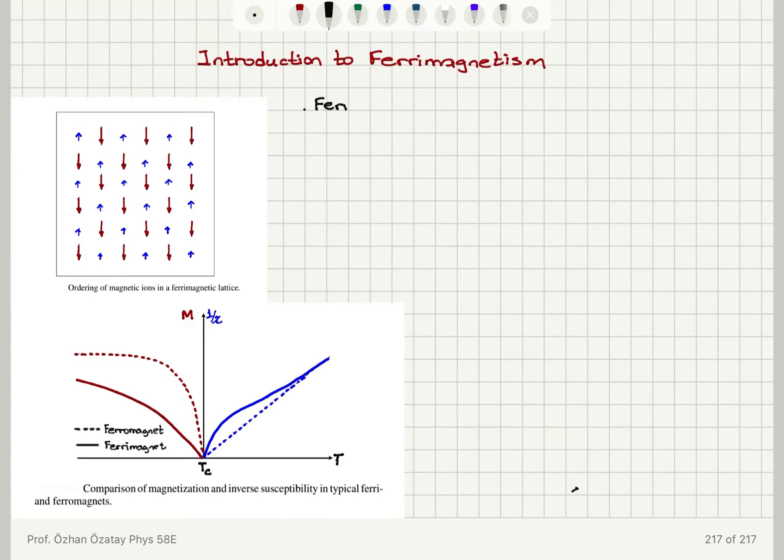Ferrimagnets behave similar to ferromagnets in the sense that they exhibit spontaneous magnetization below a critical temperature Tc.